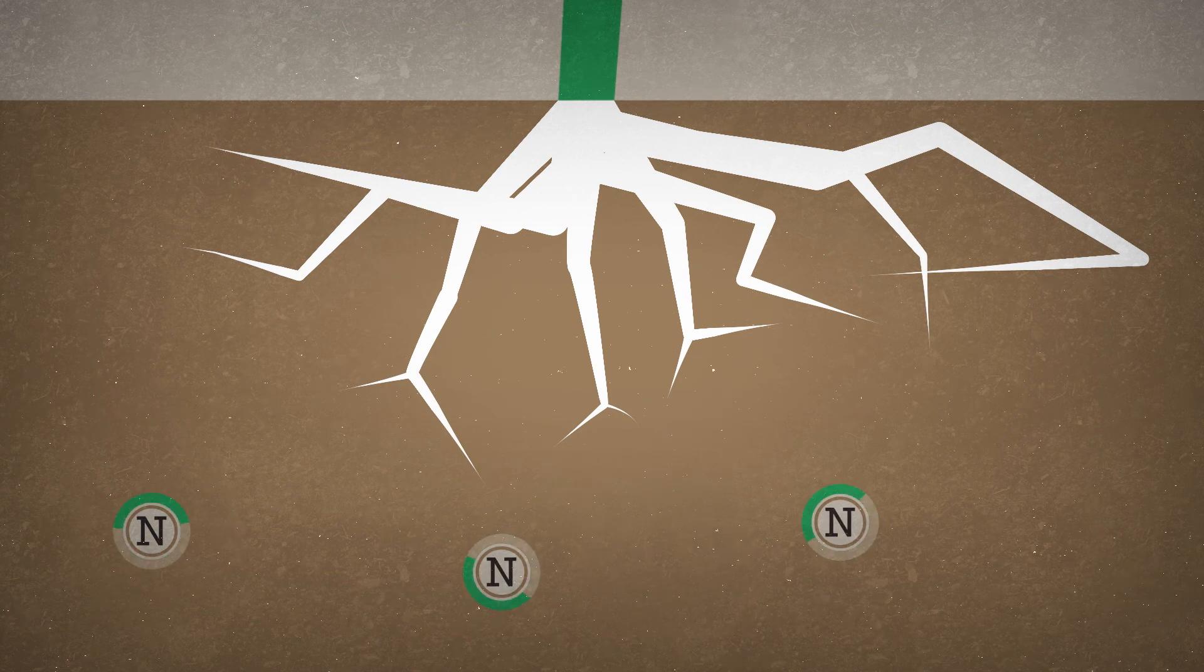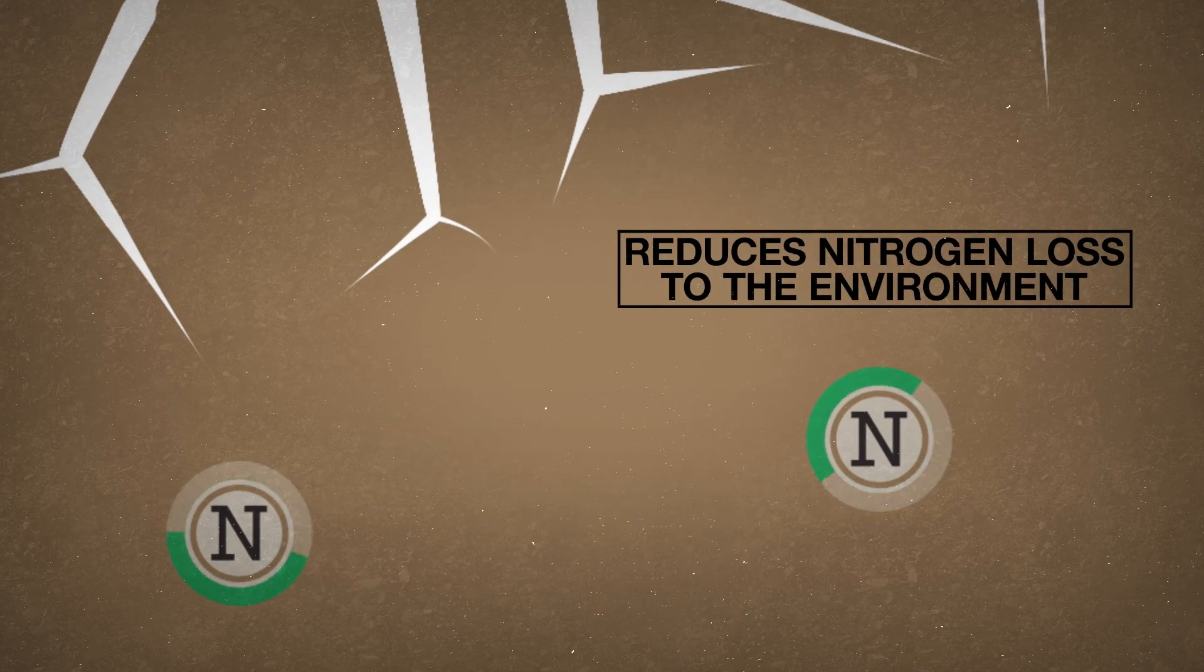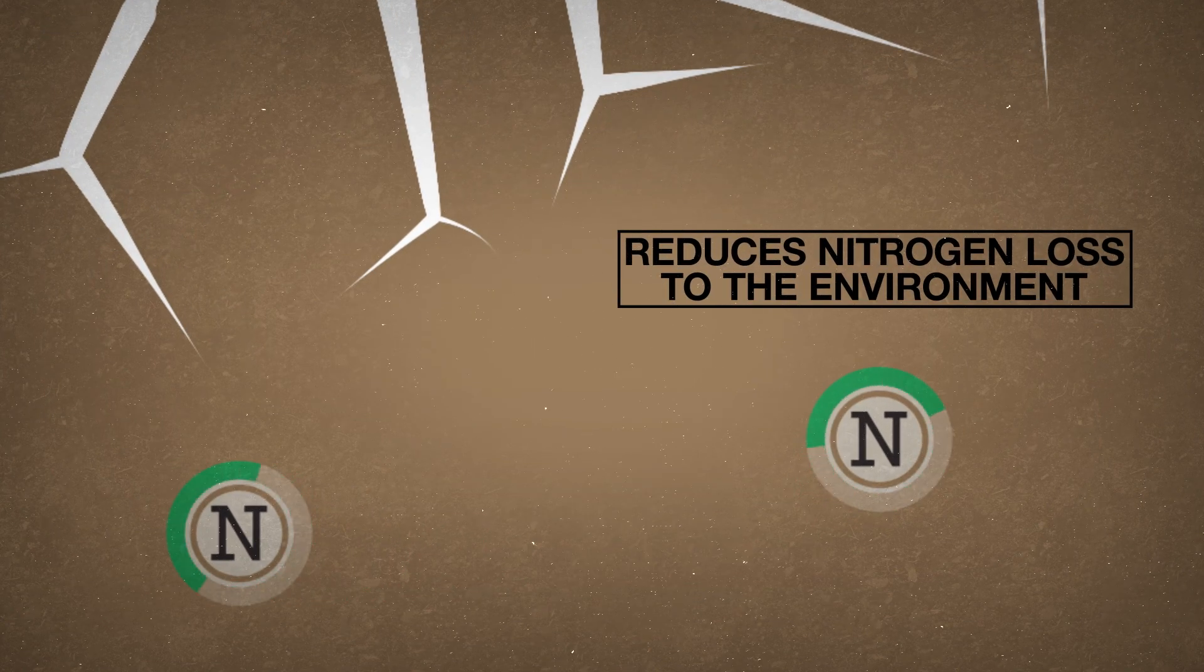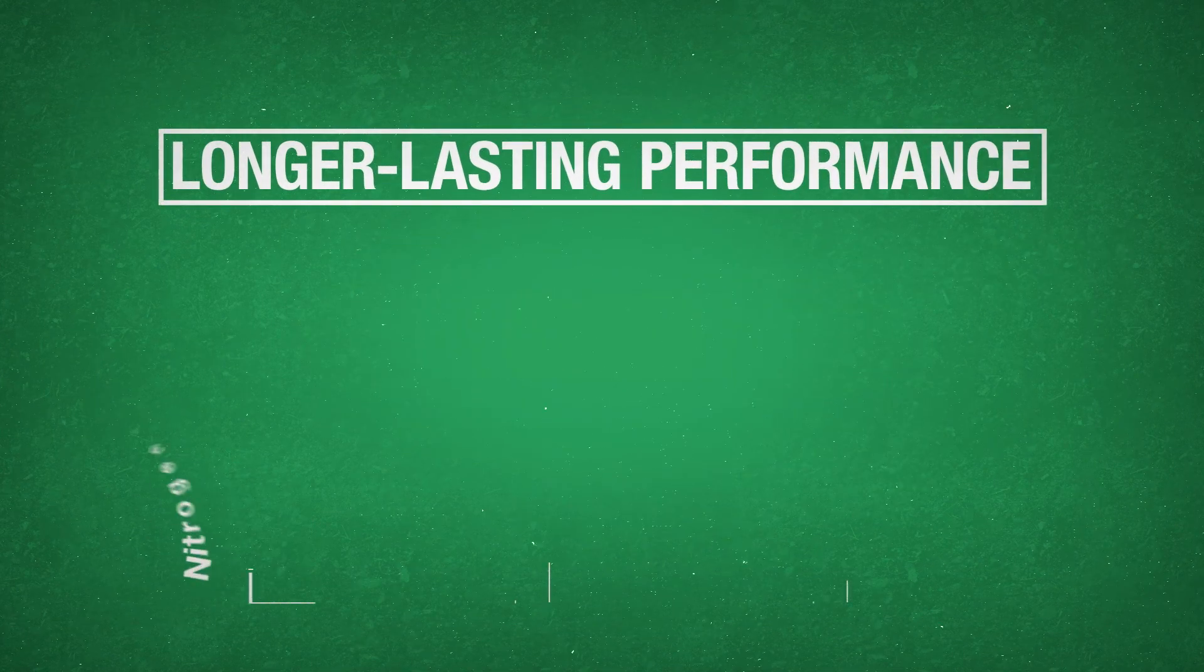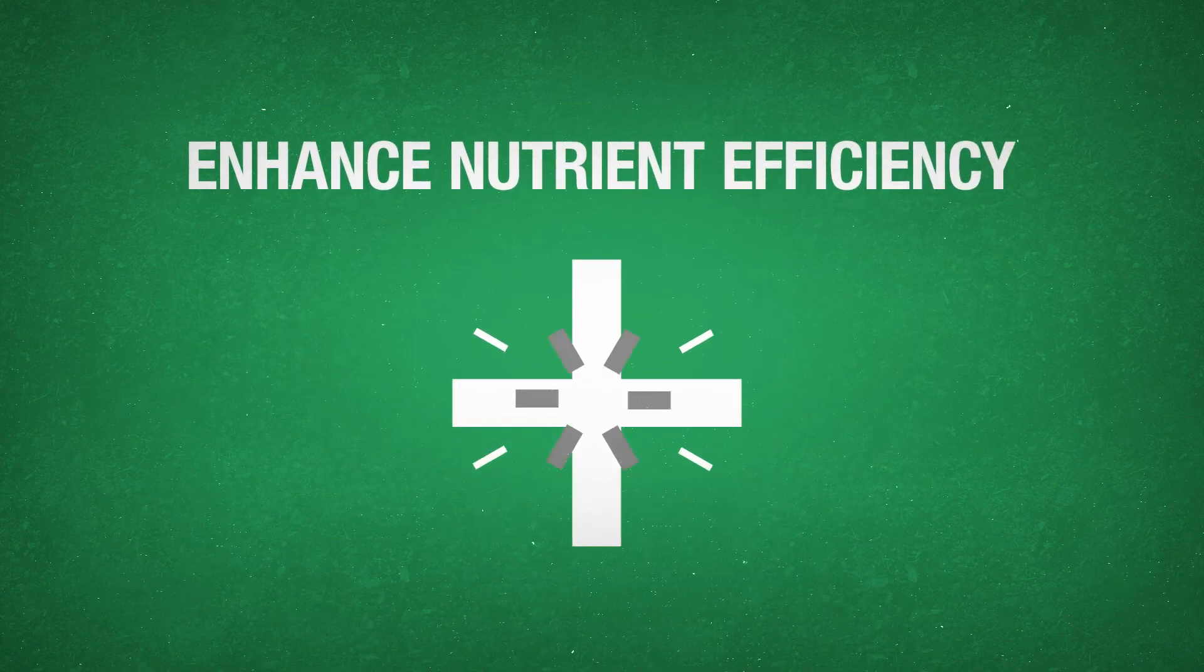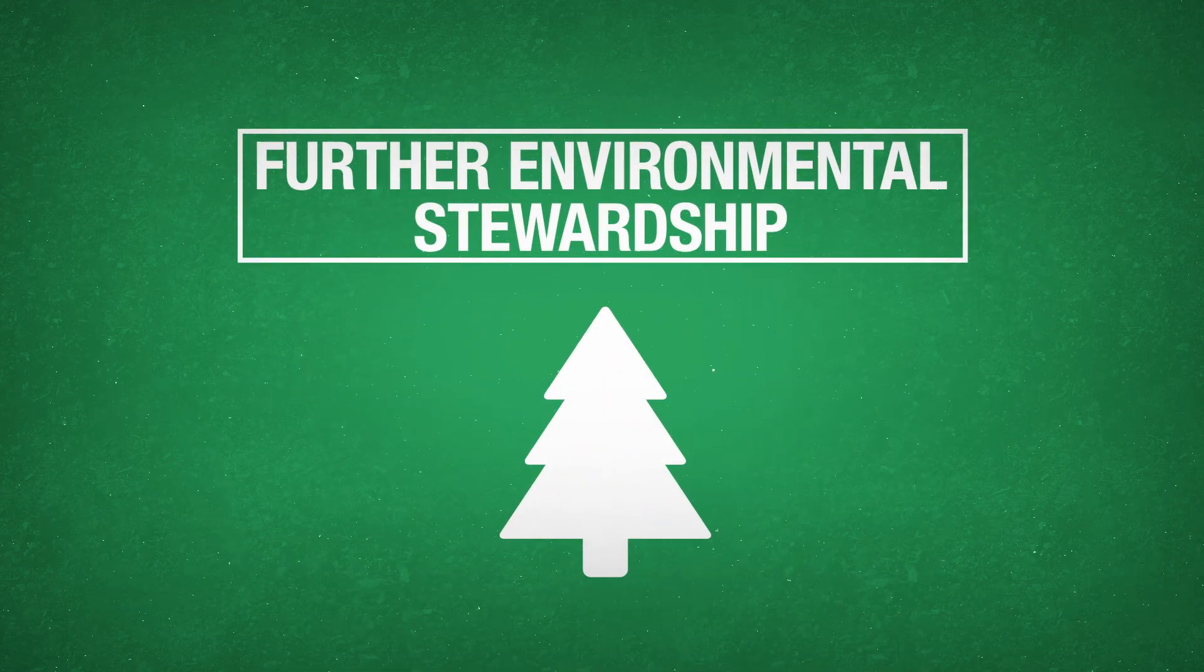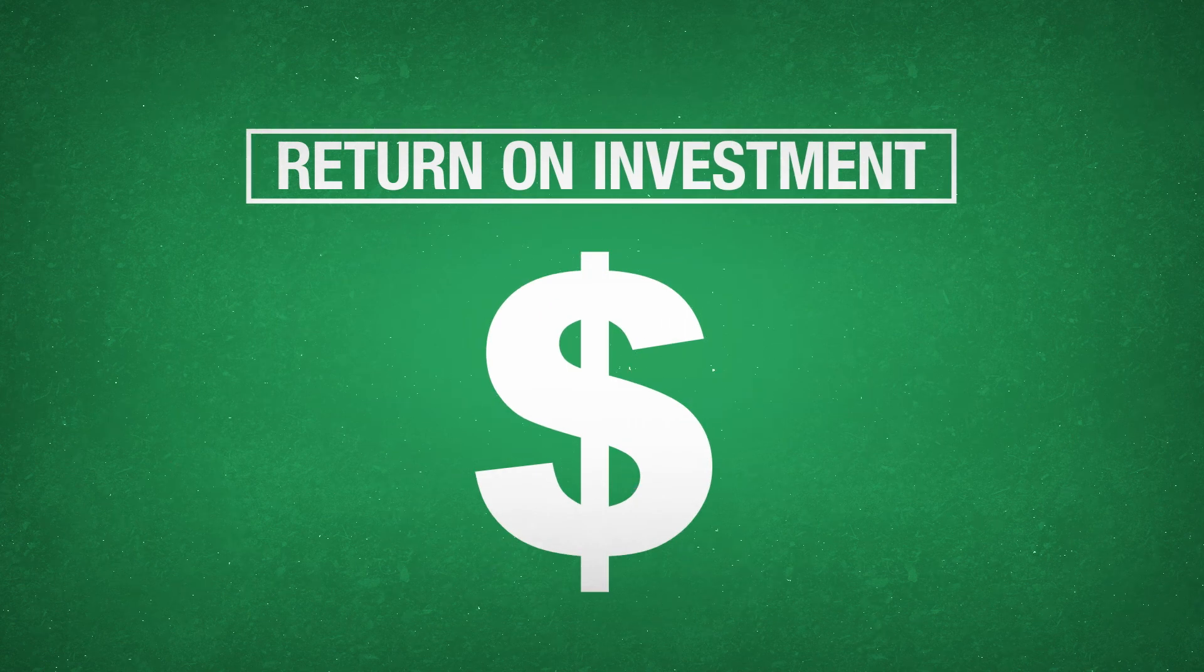Compared to fertilizer blends with standard urea, only NOS effectively reduces the potential for nitrogen to be lost through leaching or volatilization. By reducing the loss, you can ensure every dollar invested in nutrition is maximized to achieve longer-lasting performance, enhance nutrient efficiency, promote greening longevity, further environmental stewardship, and realize a better return on investment.